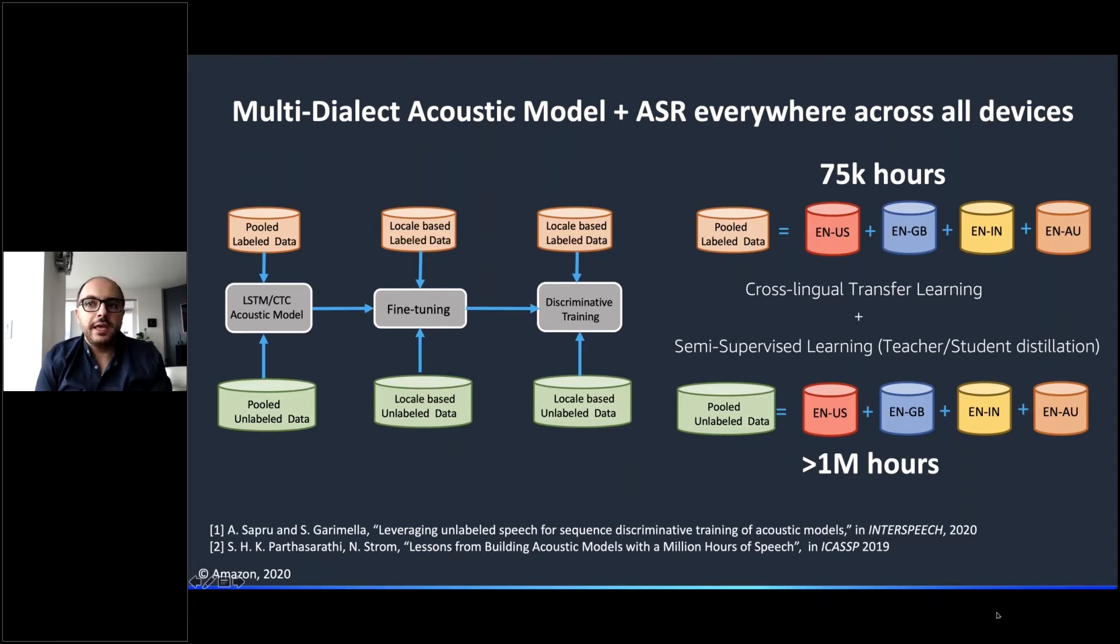We use the same pooling of the data when dealing with our unlabeled and unsupervised data. We mix up about more than 1 million hours of unsupervised data into our pool of supervised data, and we pre-train the models using this pooled data and then fine-tune the models to be locale-specific.